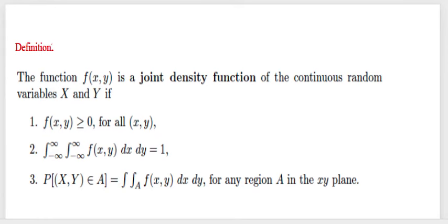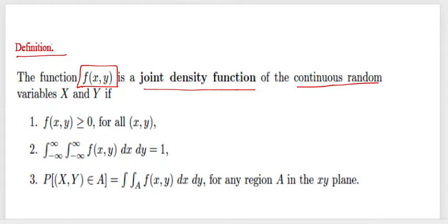Before switching over to the problem solving, let us recall all the important results and formulae. The first definition is about the joint density function for continuous random variables. We will use the notation f(x, y) for the joint density function. It is a probability function for two variables where both random variables are continuous by nature.